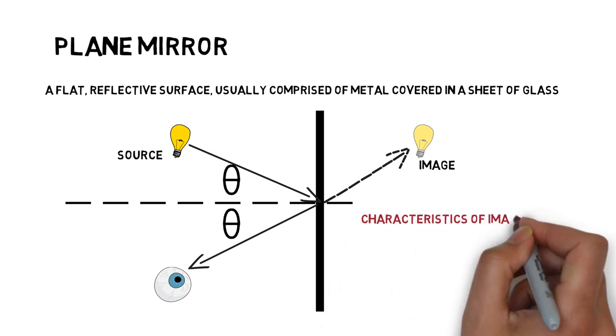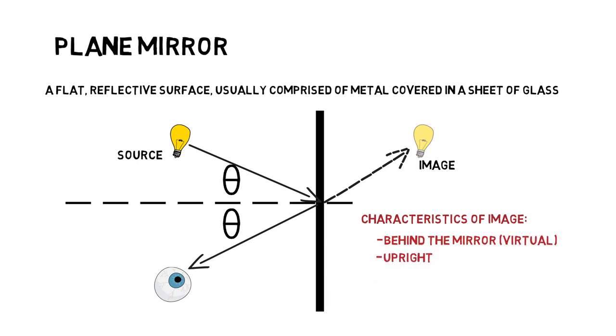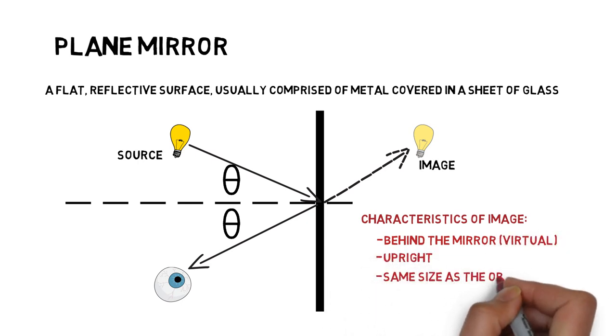The characteristics of an image formed by a plane mirror include that the images behind the mirror are virtual, upright, the same size as the object, and also the same distance from the mirror.